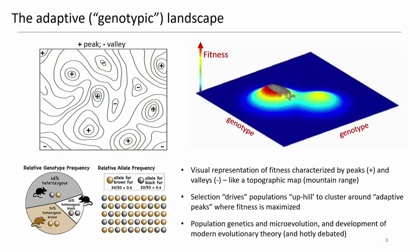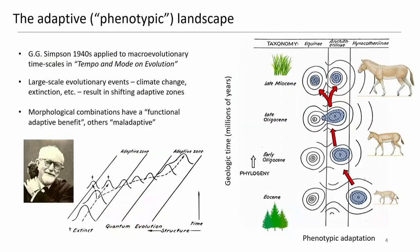The adaptive landscape in its original form was really useful in population genetics and at microevolutionary timescales, and was important in the development of modern evolutionary theory, though it was hotly debated at the time. In the 1940s, paleontologist George Gaylord Simpson applied the adaptive landscape to the phenotype and to macroevolutionary timescales. He linked large-scale evolutionary events such as climate change and extinction events to shifting adaptive zones — what he called quantum evolution. He also used adaptive landscapes to explain why organisms only explore a limited part of the phenotypic landscape, proposing that certain morphological combinations may have functional adaptive benefit while others might be maladaptive.